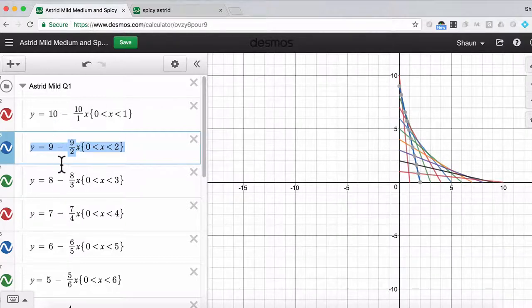Well, there's a pattern here. And the layout in Desmos really helps you see that, right? You can see that the y-intercepts are going 10, 9, 8, and the slopes are going 10 over 1...